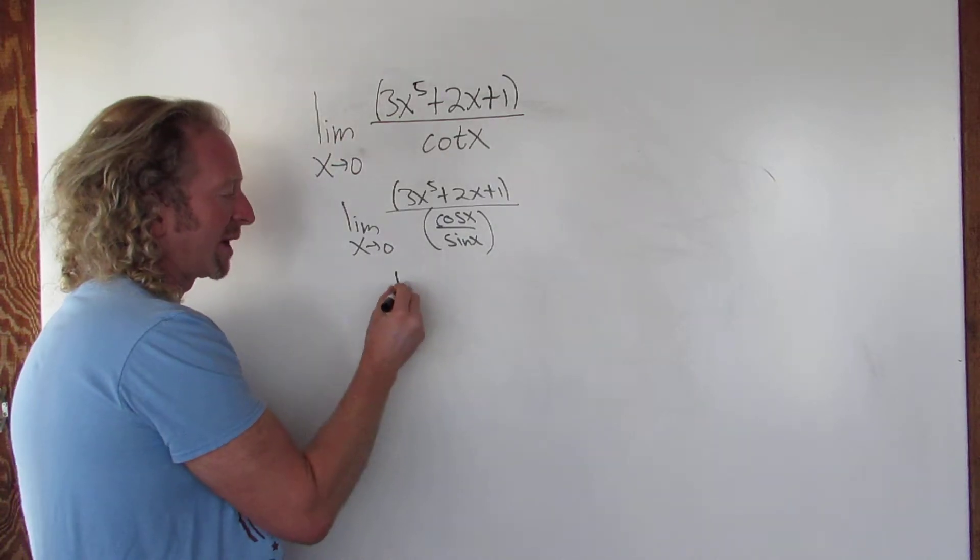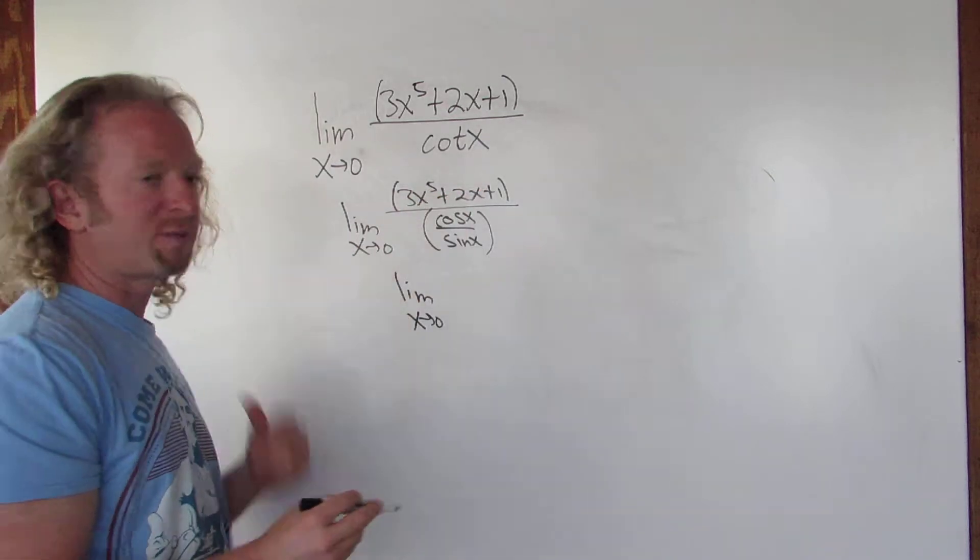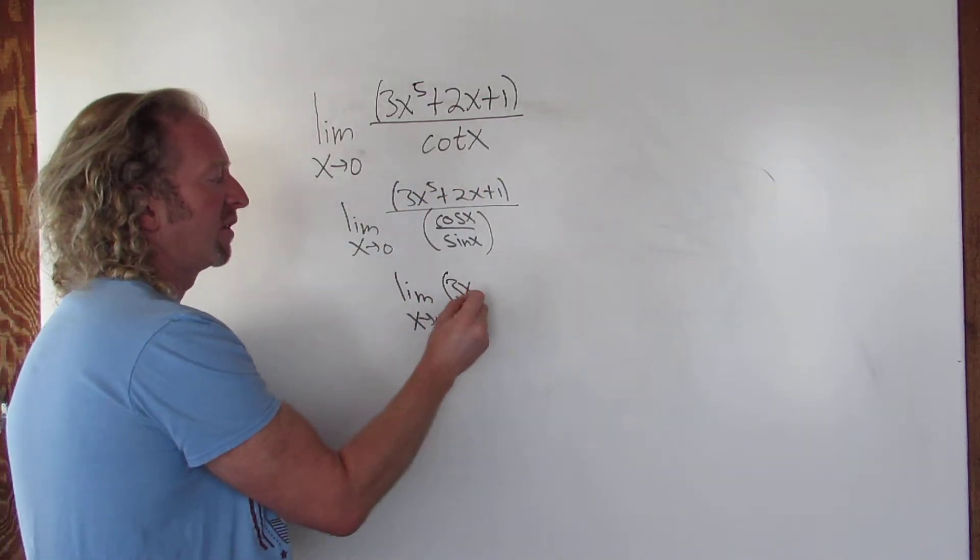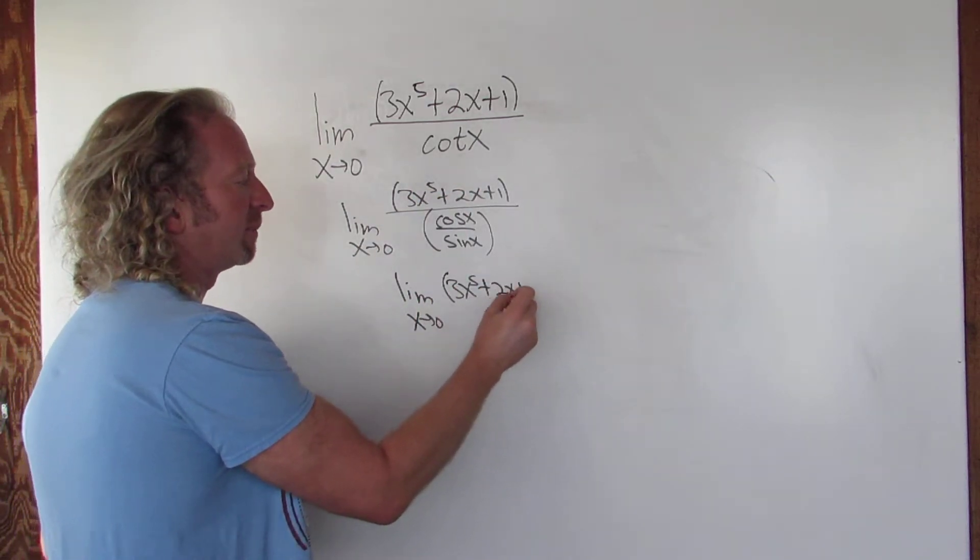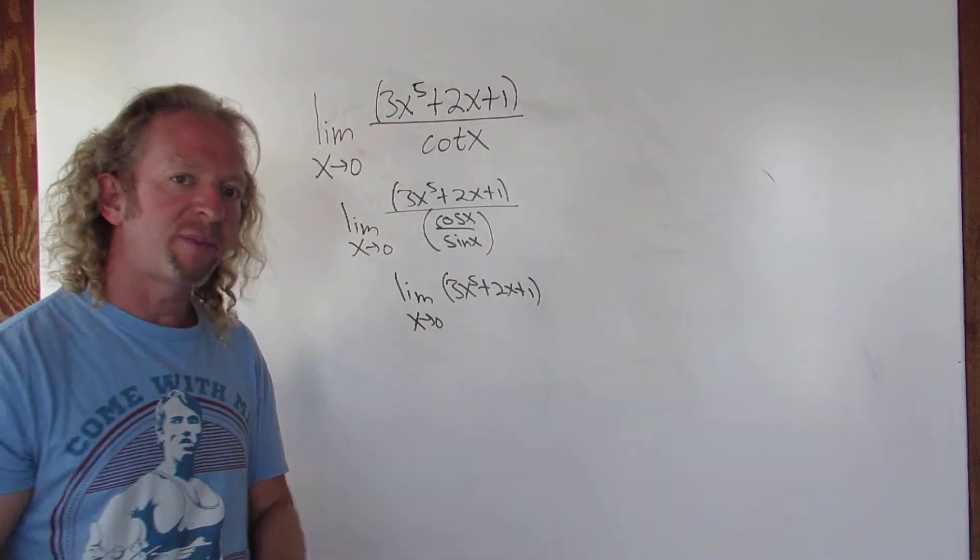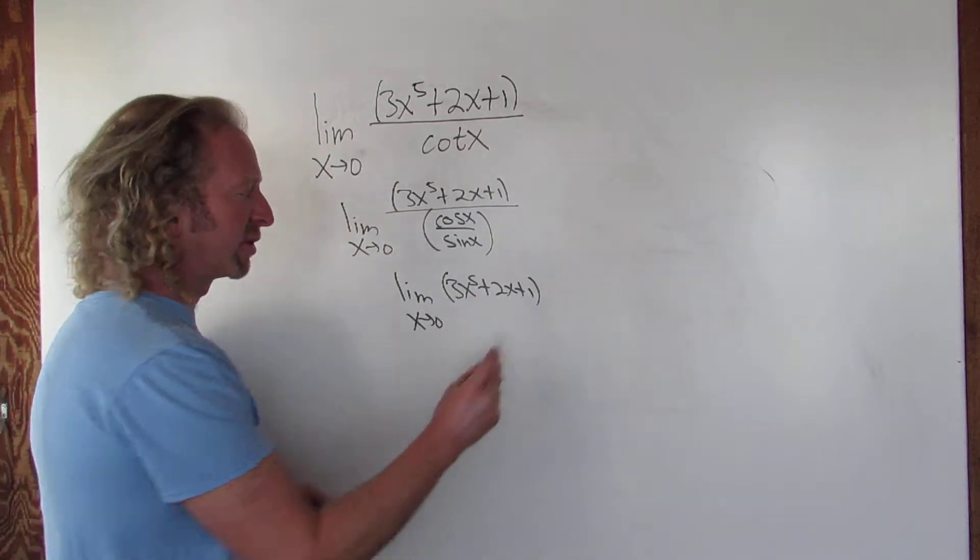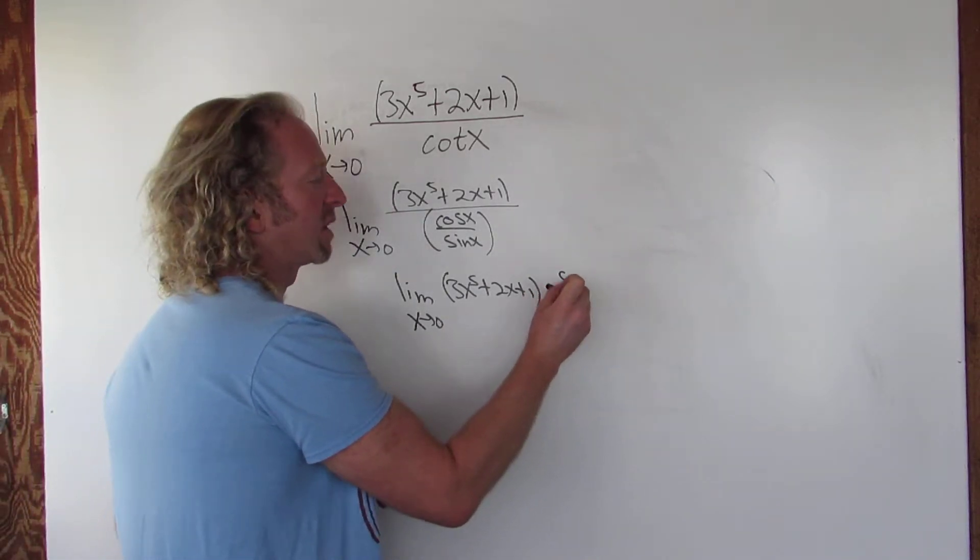So what you do next is you just do some algebra. This is the limit as x approaches 0. And we still have this piece here. So 3x to the fifth plus 2x plus 1. We're dividing by cosine over sine. So when you do that, you multiply by the reciprocal. So the reciprocal of cosine over sine is sine over cosine.